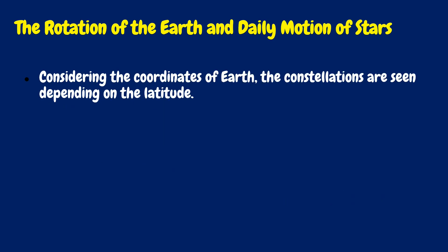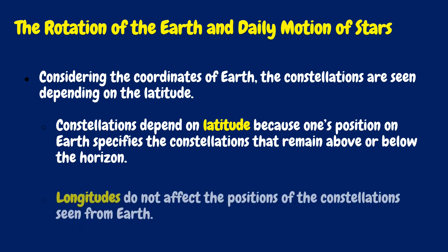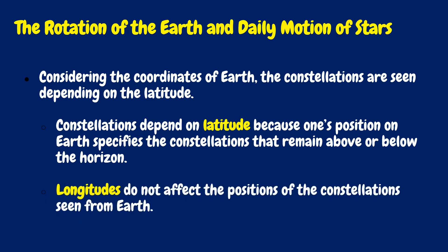Considering the coordinates of Earth, the constellations are seen depending on the latitude. Constellations depend on latitude because one's position on Earth specifies the constellations that remain above or below the horizon, while longitudes do not affect the positions of the constellations seen from Earth.